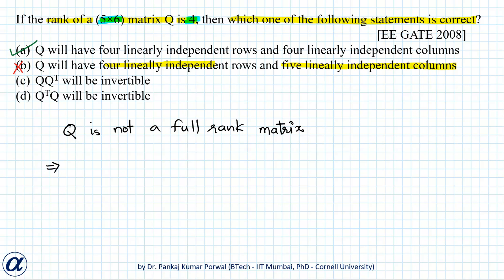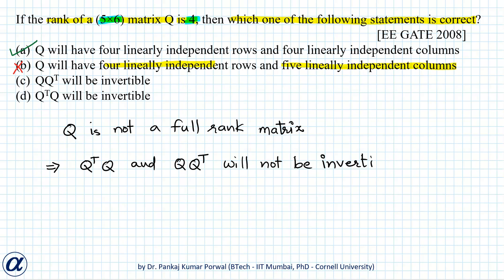From that, we conclude that Q transpose Q and Q Q transpose will not be invertible. Because Q transpose Q and Q Q transpose will be invertible only if Q is a full rank matrix. So options C and D are also not correct.